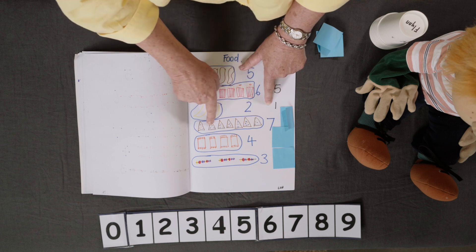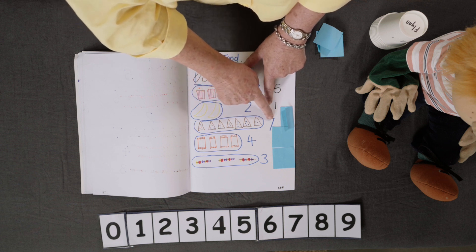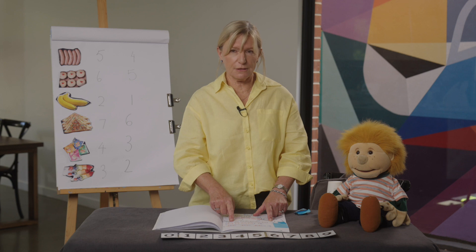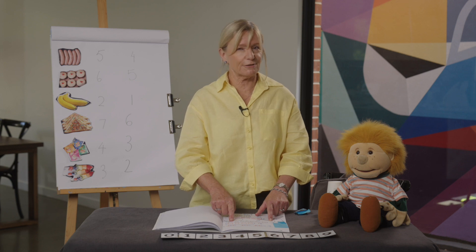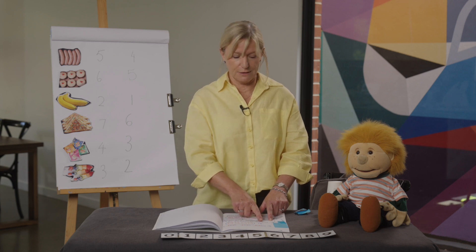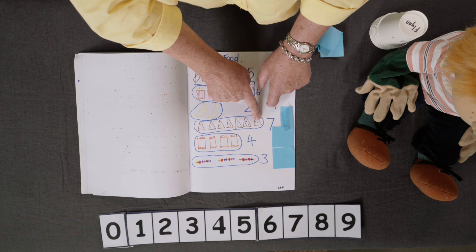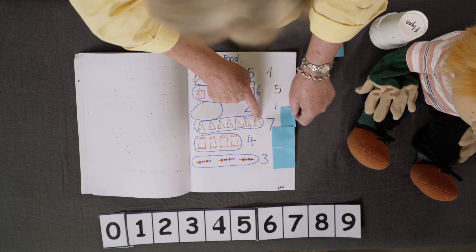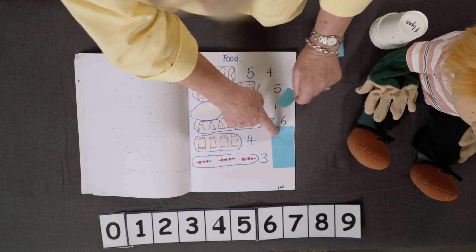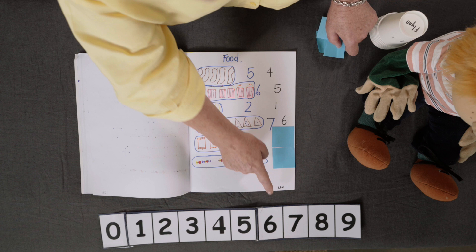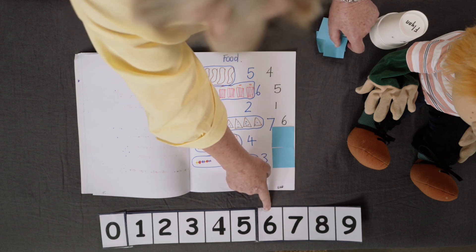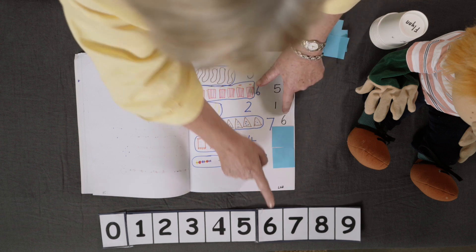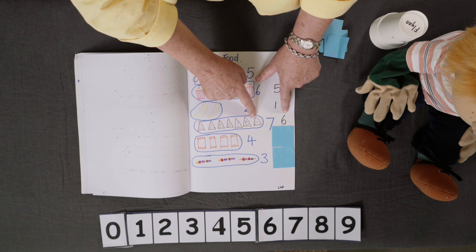What about the fairy bread? If seven people turn up to the picnic, there's a piece of fairy bread for everybody. But what if somebody doesn't turn up? That means he actually only needs six pieces of fairy bread and one would be wasted.